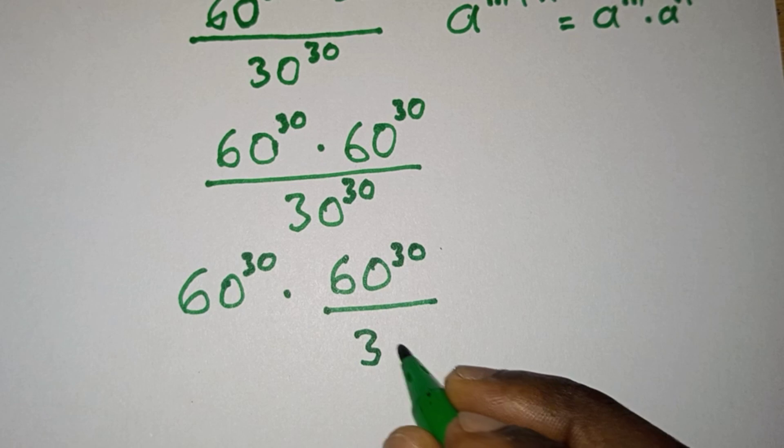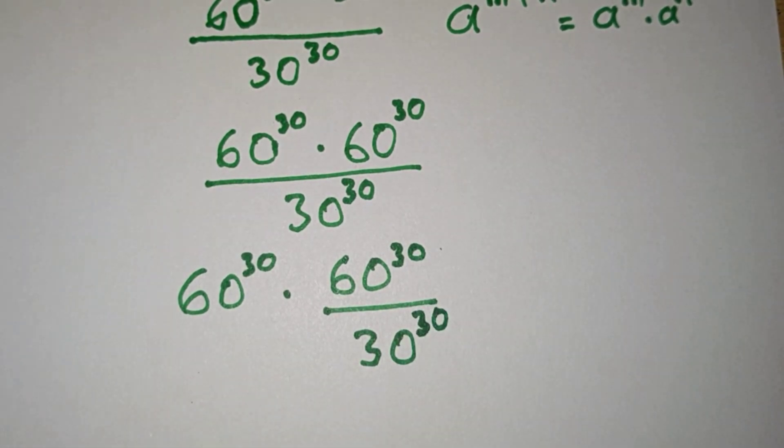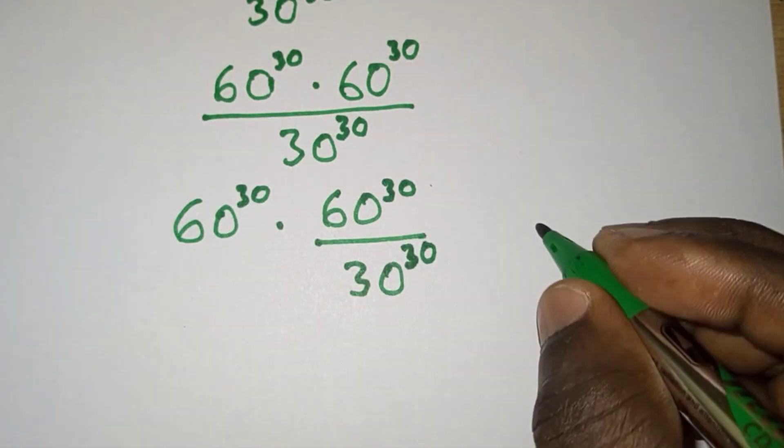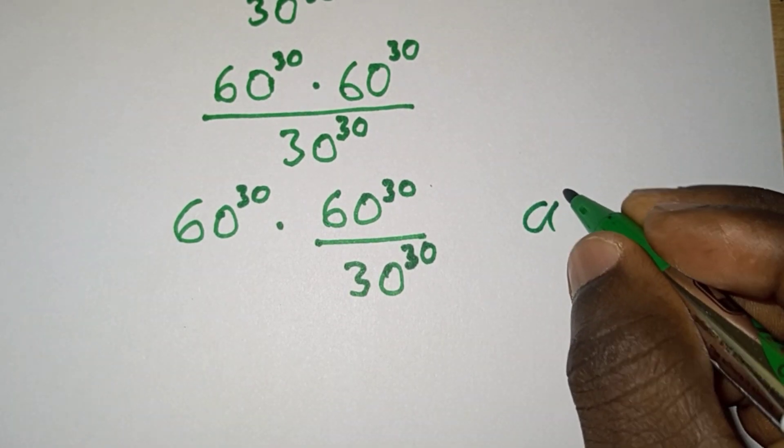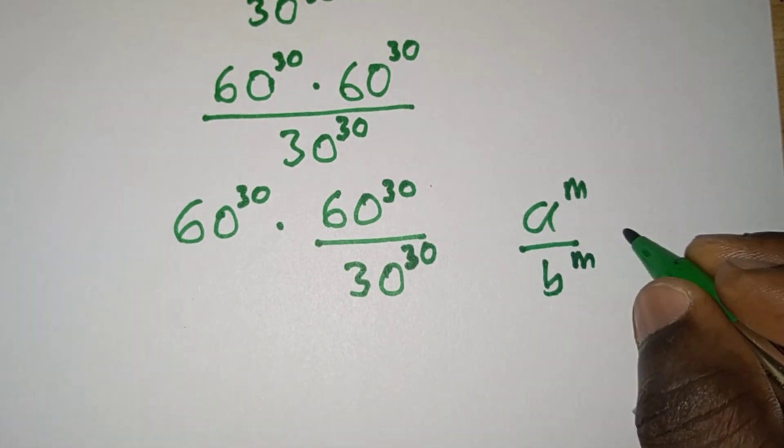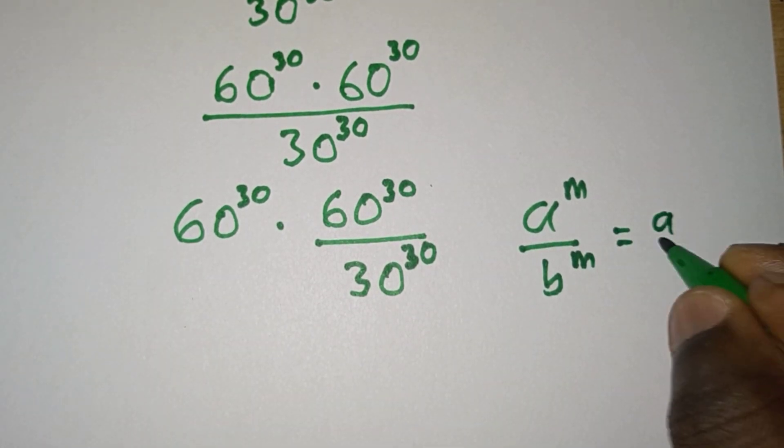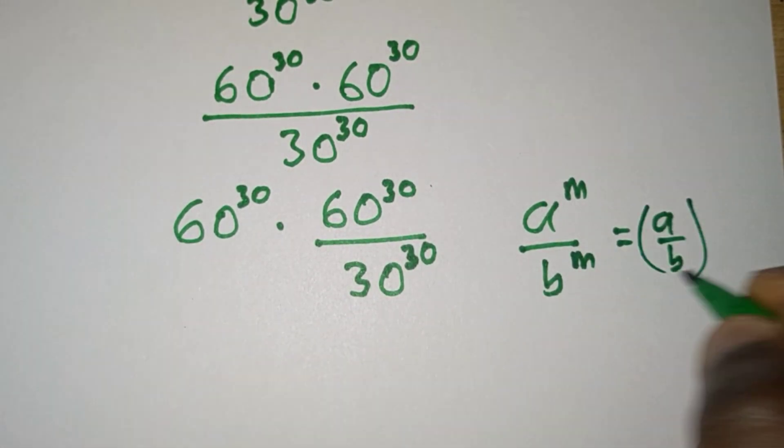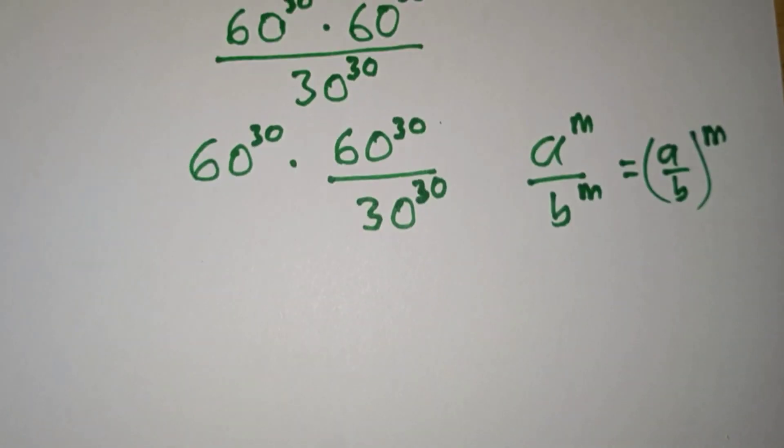Now let's recall again that if we have a to the power m over b to the power m, we can write this as a over b to the power m. So from here we're gonna have 60 to the power 30 times 60 divided by 30 to the power 30.